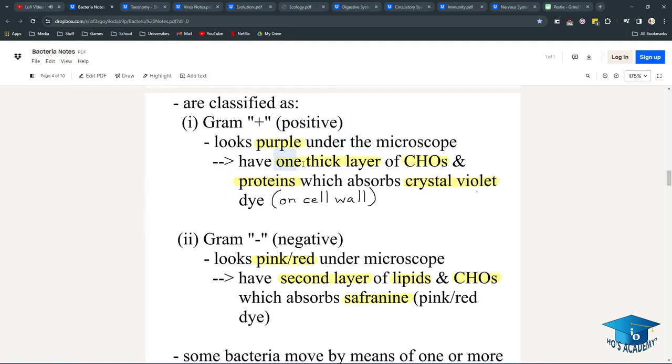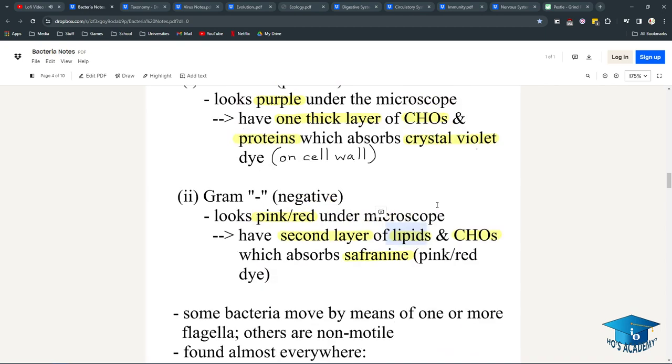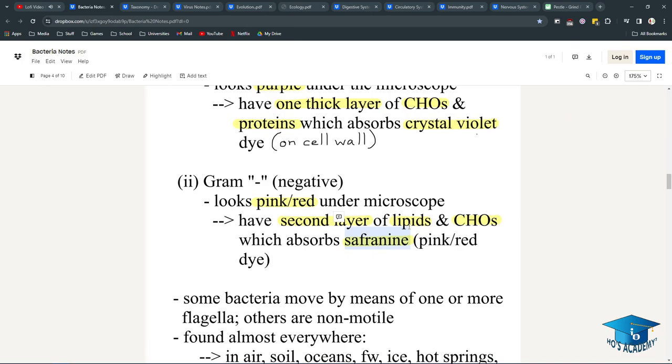Crystal violet dye will show up for gram-positive bacteria and they will look purple. That means they have one thick layer of peptidoglycan, which are carbohydrates and proteins. But gram-negative bacteria have a second thinner layer made of lipids and carbohydrates instead of proteins and carbohydrates, which absorbs safranine, the pink-red dye.